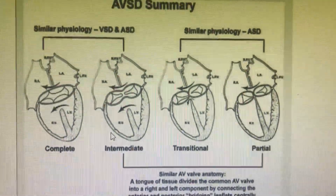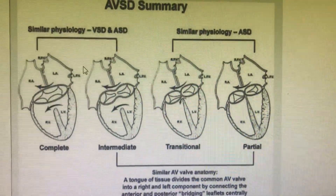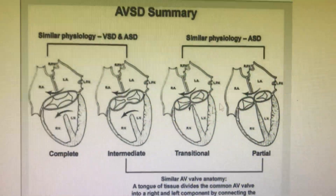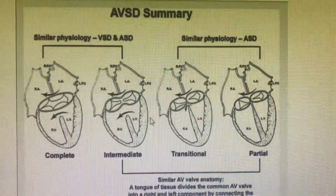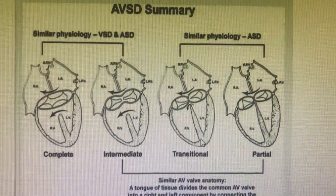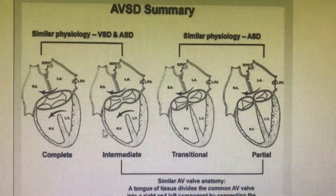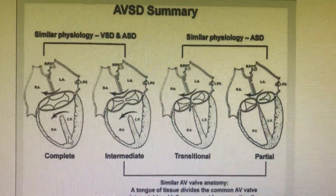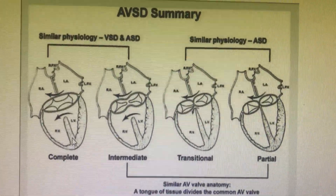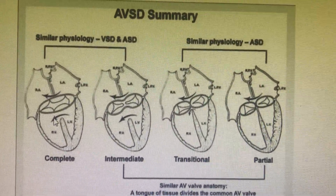This is the basic classification of the atrioventricular septal defect. There are four major variants of the atrioventricular septal defect, and the complete variant itself has Rastelli's three variants of AVC, which we will be discussing separately.